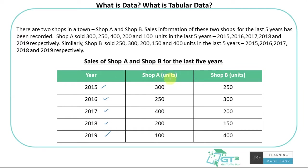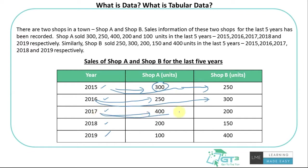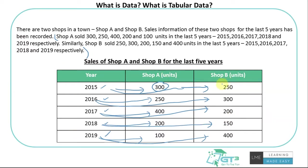Shop A sold 300 units in 2015, Shop B sold 250 units in 2015. In 2016, Shop A sold 250 and Shop B sold 300. In 2017, Shop A sold 400 and Shop B sold 200. In 2018, Shop A sold 200 and Shop B sold 150. In 2019, Shop A sold 100 and Shop B sold 400. The same information we discussed in text is now put into tabular form — this is tabular data.